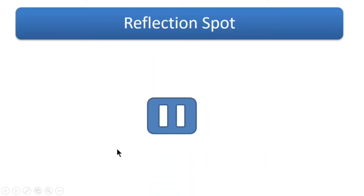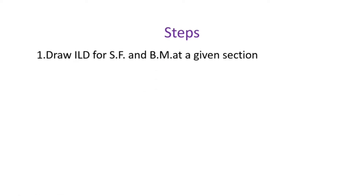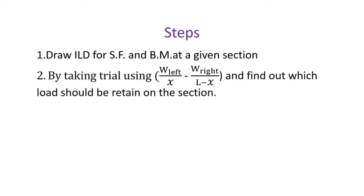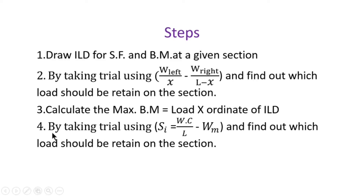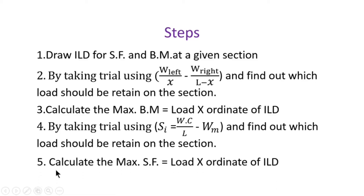Now take a pause and a question arises: what are the different steps? First step is to draw the ILD for shear force and bending moment at a given section. Next, by taking a trial using the formula W_left divided by x minus W_right divided by L minus x, find out which load should be placed on the section. After this, calculate maximum bending moment equal to load into ordinate of the ILD. For shear force, take a trial using the formula: increment in shear force SI equals W into c divided by L minus W_m, and find out which load should be placed on the section.